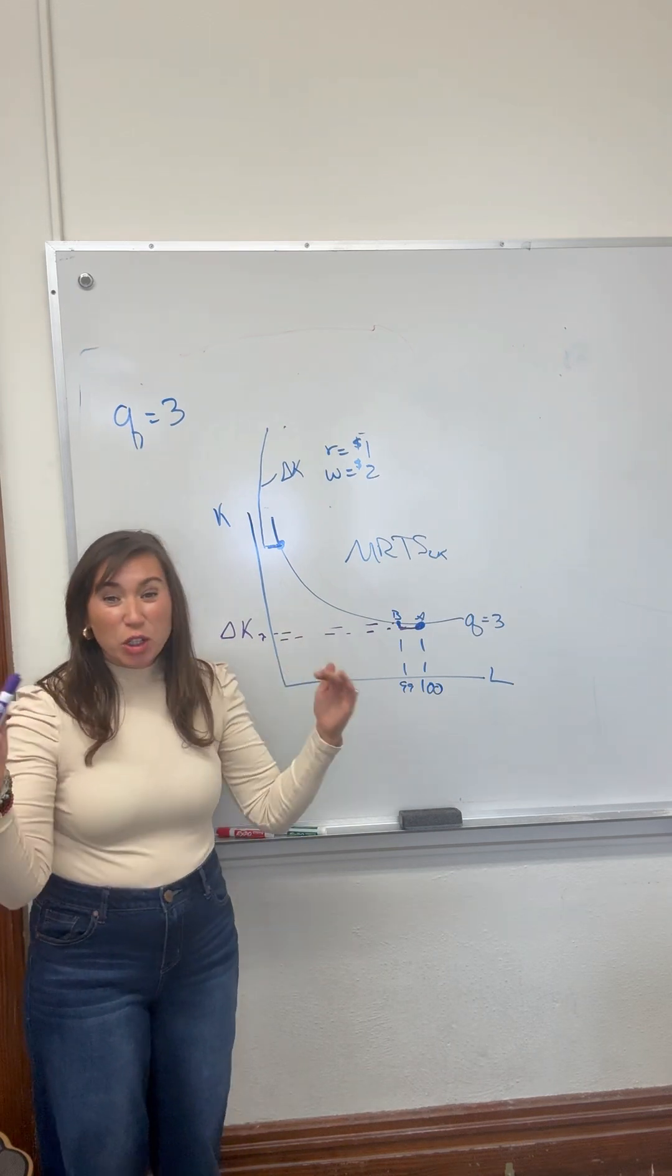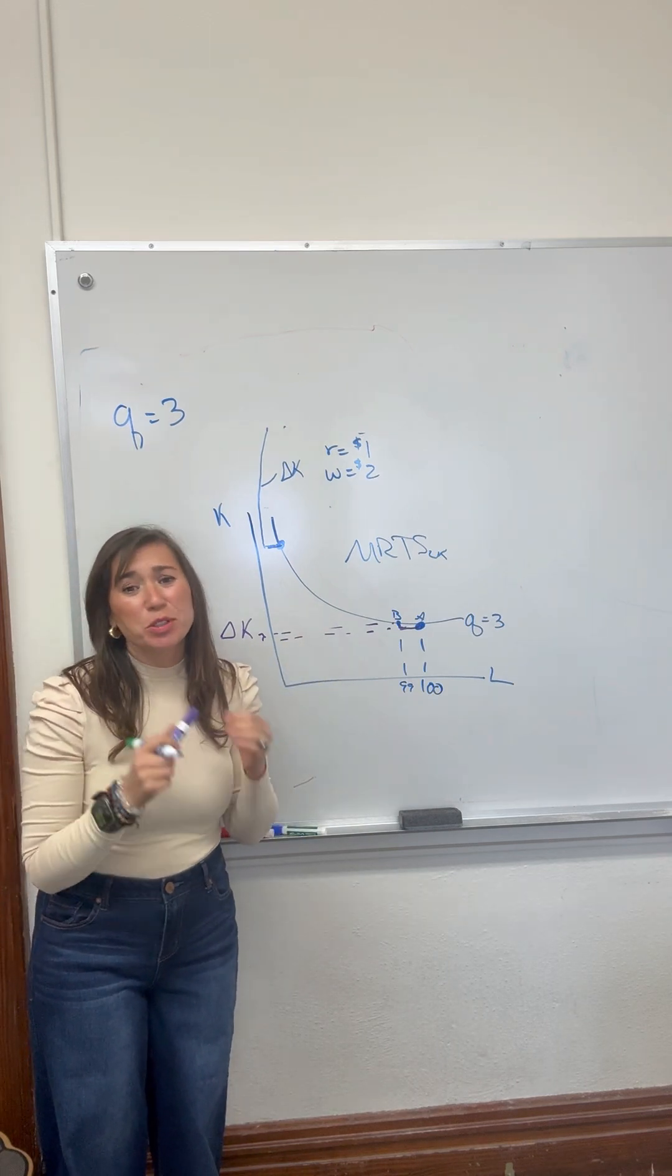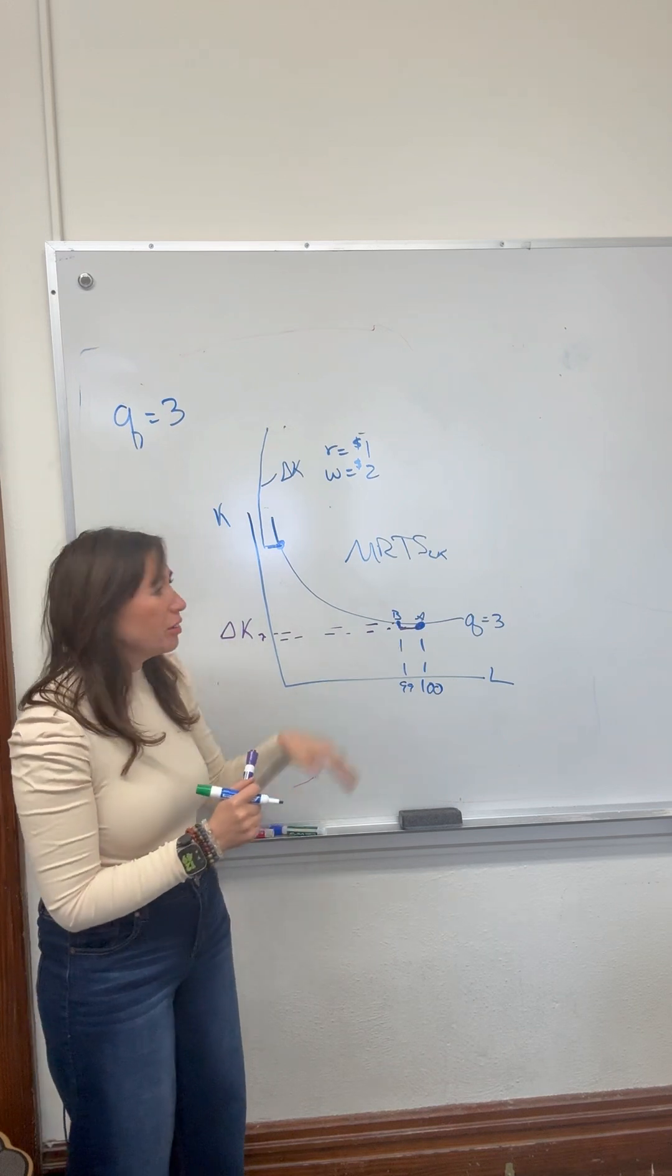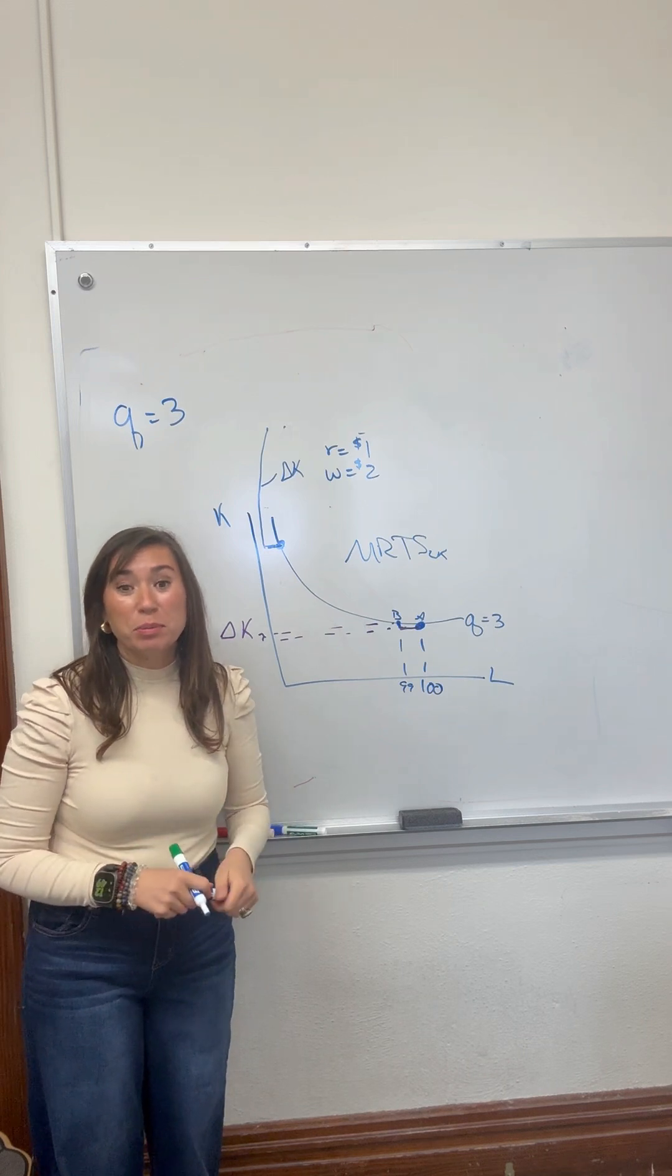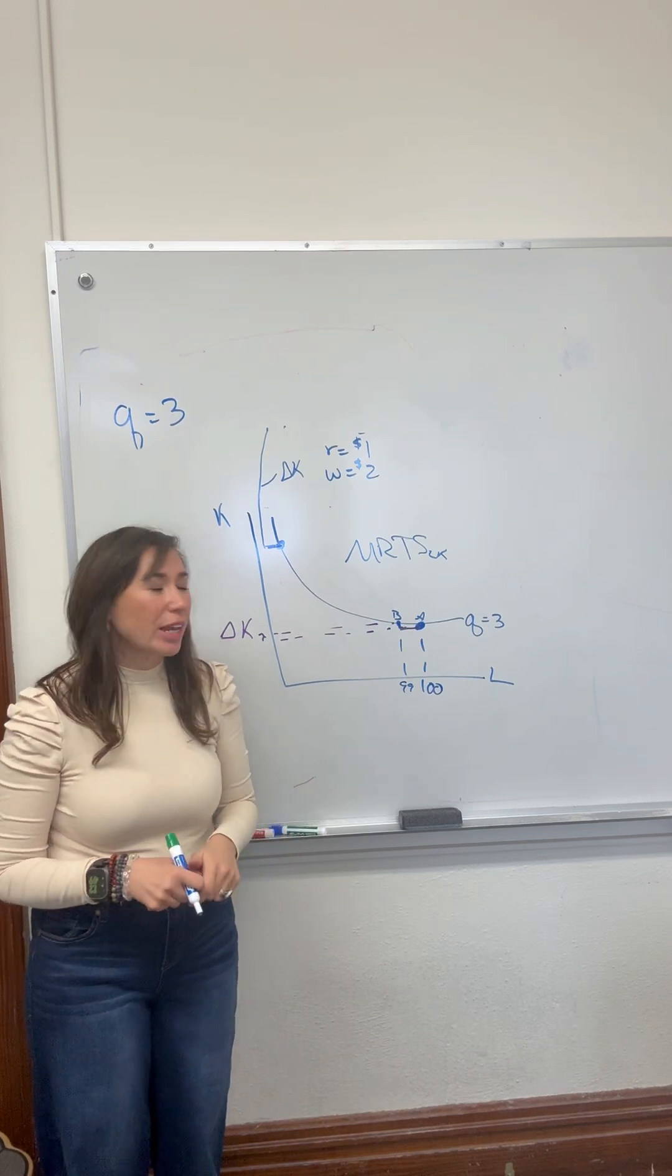So that delta K is huge because that last labor is really valuable. Versus down here, maybe you're already at the point of diminishing marginal returns from labor. We've got laborers waiting in line for capital.